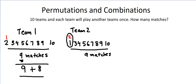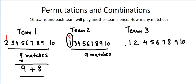Now let's do team three. Team three will not play with itself, and it plays with teams one, two, four, five, six, seven, eight, nine, and ten. But matches three-and-one and three-and-two have already been counted. So those two matches we cannot count again, and we are left with seven more new matches.